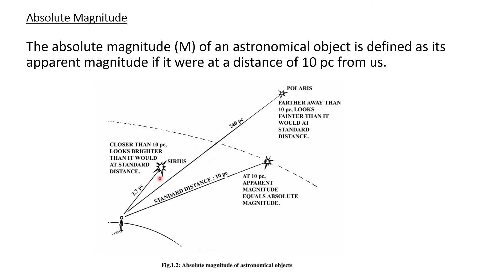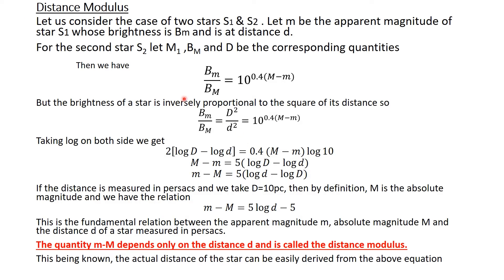Similarly, for any other star, we arbitrarily place it at a distance of 10 parsecs and measure its apparent magnitude — that apparent magnitude will be its absolute magnitude. Now let's discuss distance modulus. We consider two stars, S1 and S2.